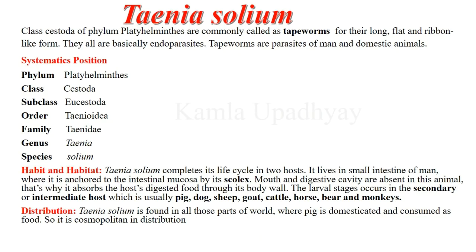Taenia solium belongs to class Cestoda of Phylum Platyhelminthes, which are commonly called tapeworms for their long, flat and ribbon-like form, and they are basically endoparasites. The characteristic feature of Phylum Platyhelminthes is that they are acoelomate, triploblastic, bilaterally symmetrical, vermiform, dorsoventrally flattened, and devoid of a definite anus, without skeleton, respiratory and circulatory system.